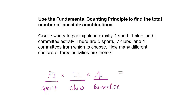So five times seven is 35, and 35 times four is 140. There will be 140 possible outcomes.